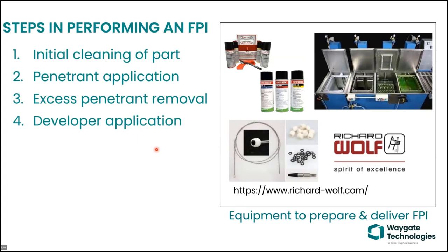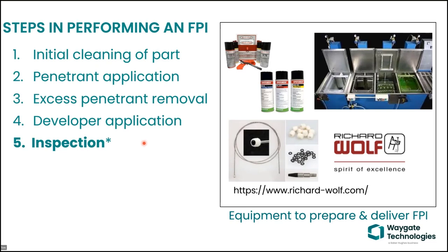Once you've come up with a process to deliver the FPI, you have to let it dwell for a certain time, then remove the excess penetrant. You may or may not have to apply a developer — once you've wiped the excess penetrant off, you can spray on this secondary material which pulls the stuck FPI fluid in the crack up to the surface, making it more apparent when illuminated with UV light. Then you perform the inspection — that's what WayGate does. Finally, after performing the inspection, to avoid leaving potentially corrosive material on the part, you need to perform a final cleaning.